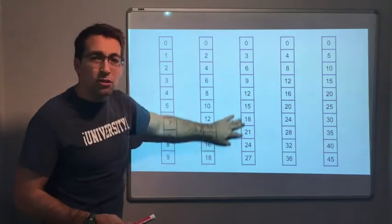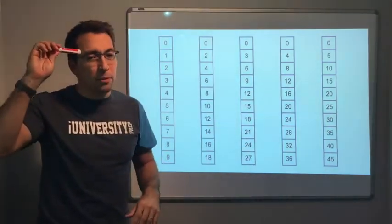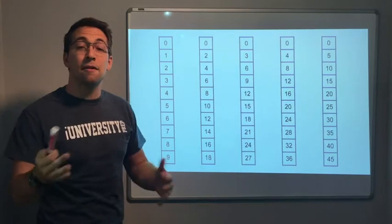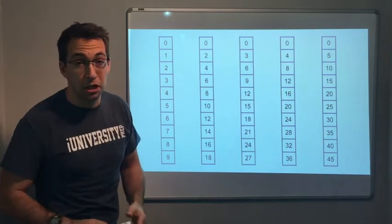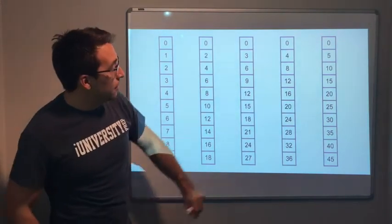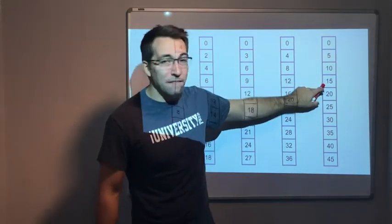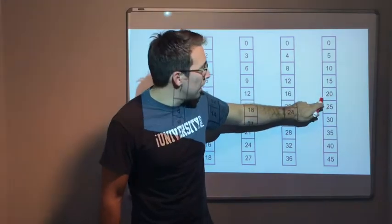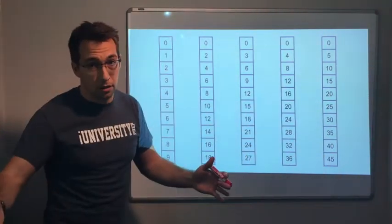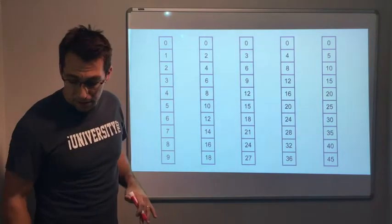No matter the multiple, we need to be able to count by multiples, because it affects our multiplication tables. Counting by 5: 5, 10, 15, 20, 25, 30, 35, 40, 45, 50.